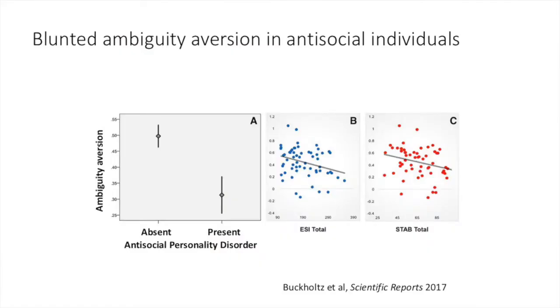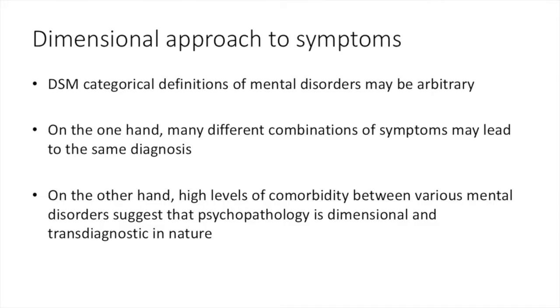Another disorder, antisocial personality disorder, shows reduced aversion to ambiguity. Interestingly, there is a continuous association between ambiguity aversion and symptom severity on questionnaires measuring antisocial behavior — more severe symptoms are associated with lower ambiguity aversion. This approach is consistent with where psychiatric research is moving: away from categorical definitions of disorders towards a more continuous examination of symptoms and the cognitive and emotional constructs that might underlie them.